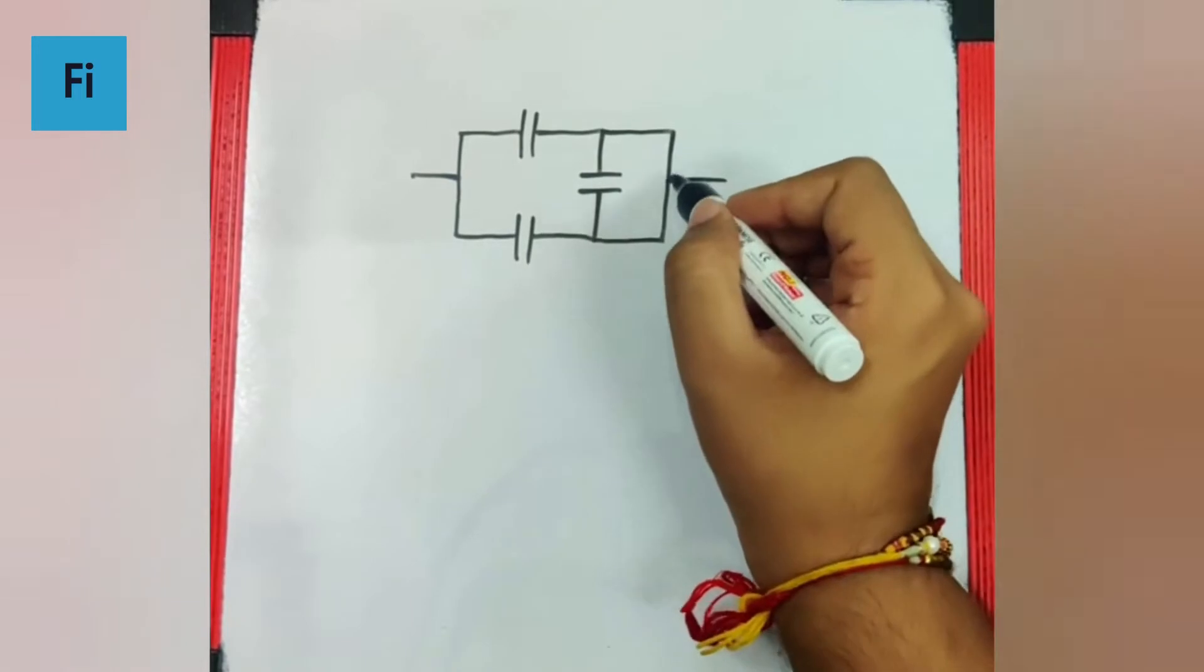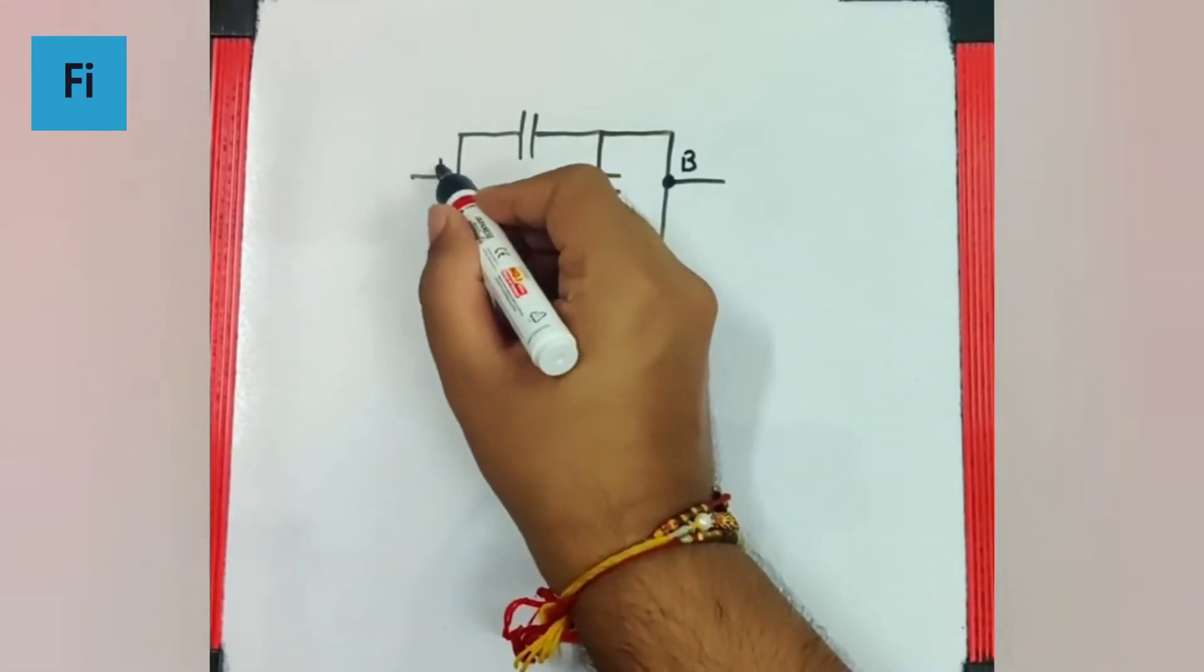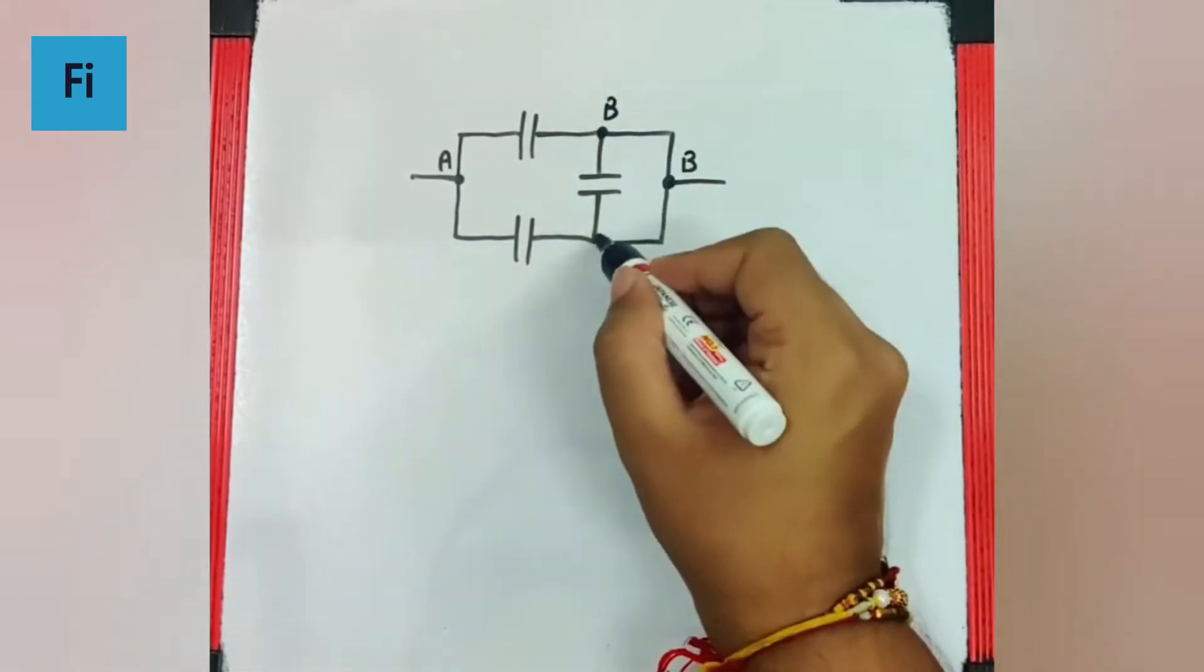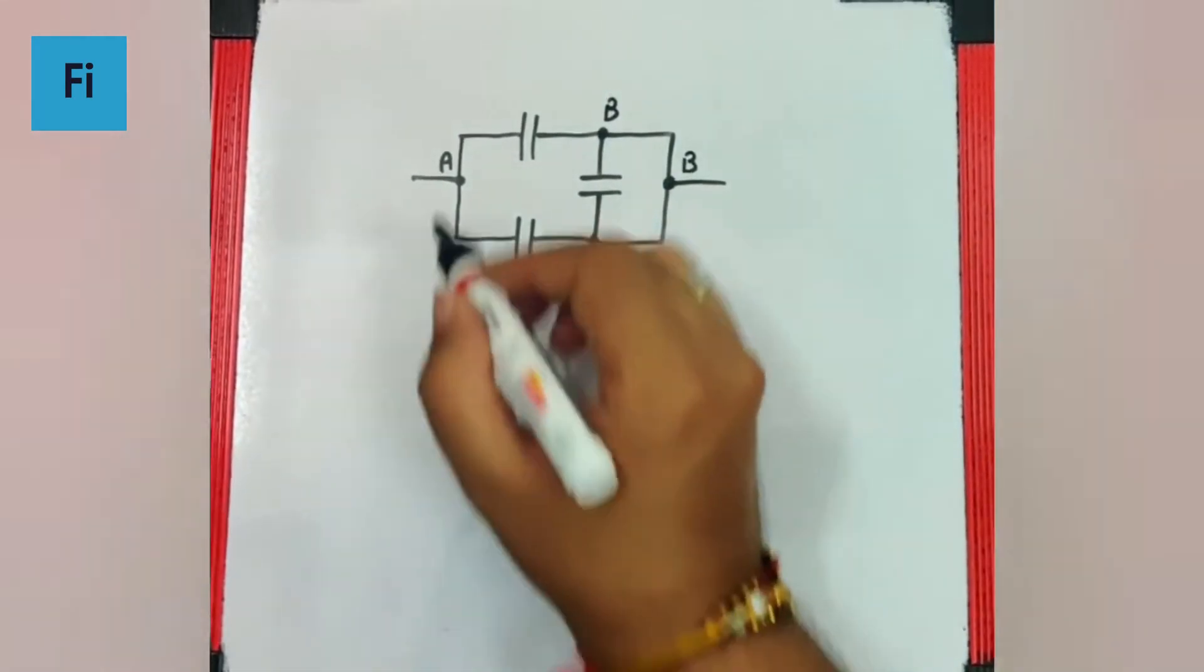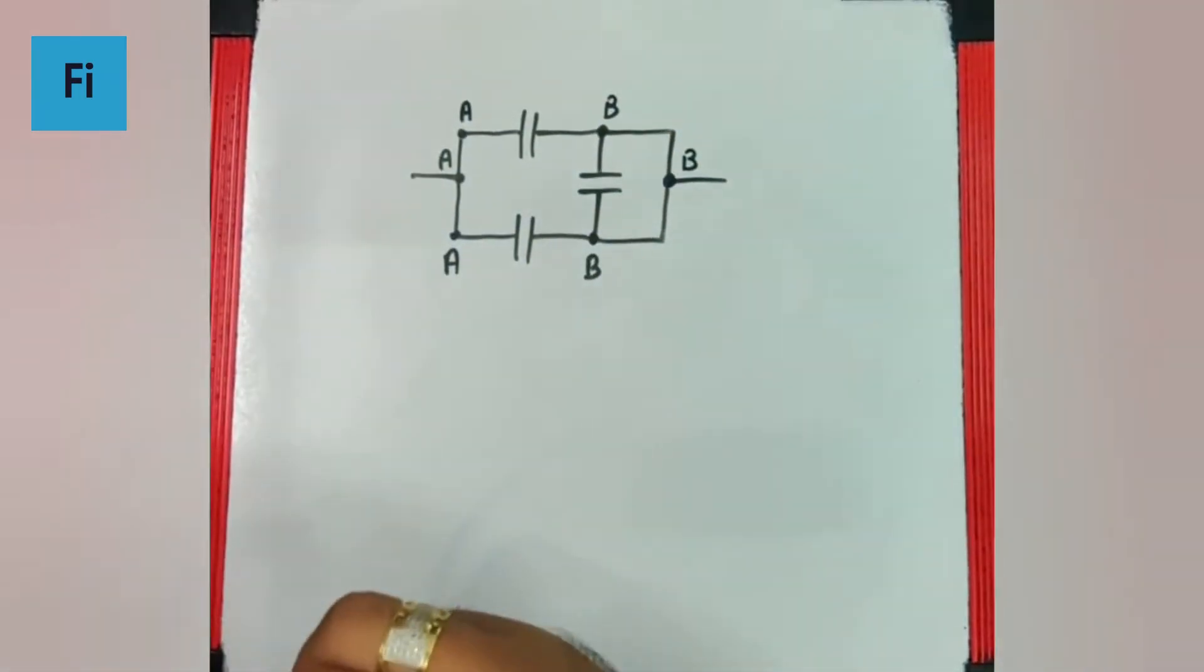If I call this point B and this is point A, I can say even this is point B and this is point B, and this is point A and this is point A. So we can identify the equipotential points.